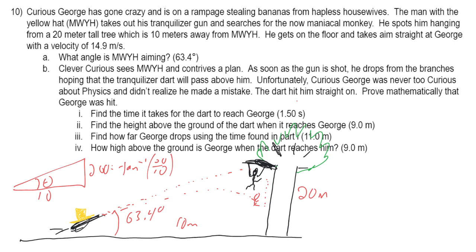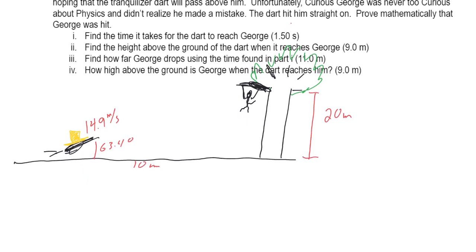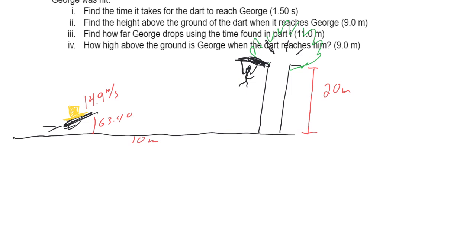Now for the meat of the problem. We're going to find where the bullet is when it reaches the monkey's horizontal plane, then find where the monkey is at that same moment. If those two heights are the same, we've proven the monkey gets hit.